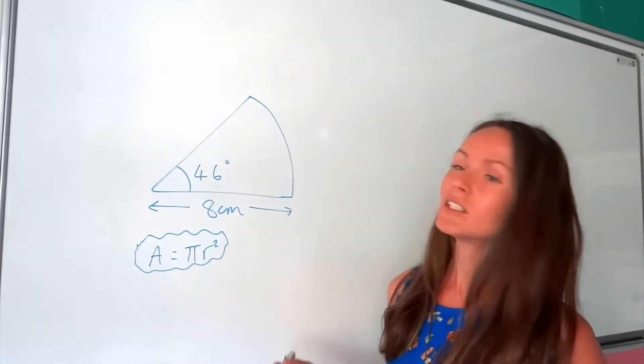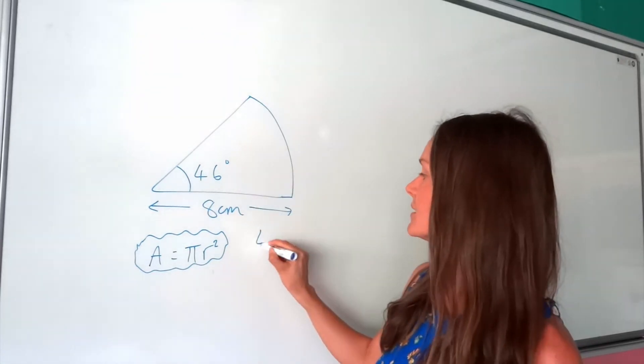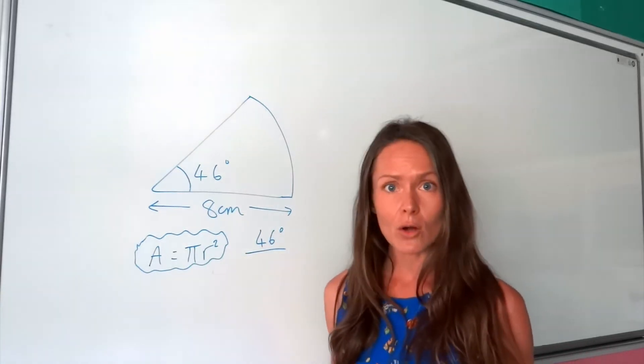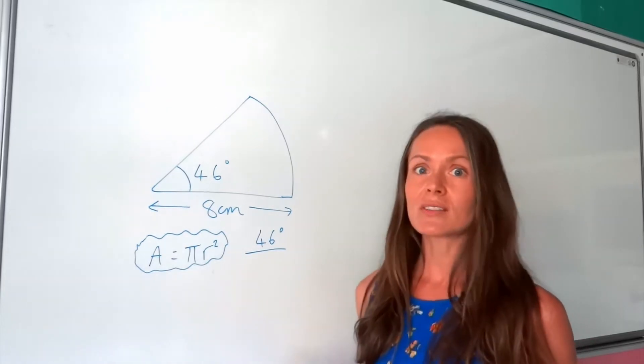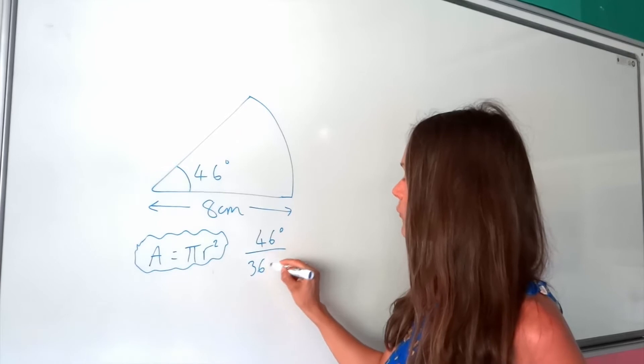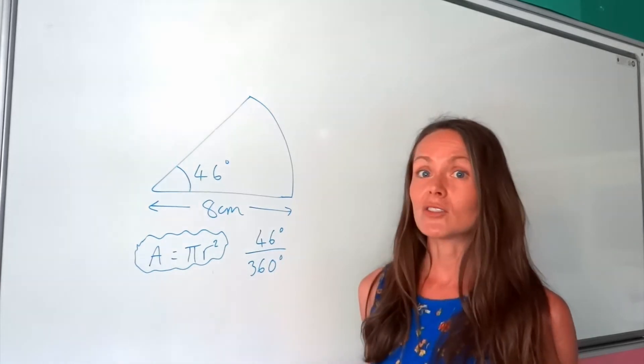So what you need to do is take the number of degrees, so 46 degrees, and write that as a fraction of a whole circle. Well in a whole circle we have 360 degrees, so you need to write that 46 out of 360.